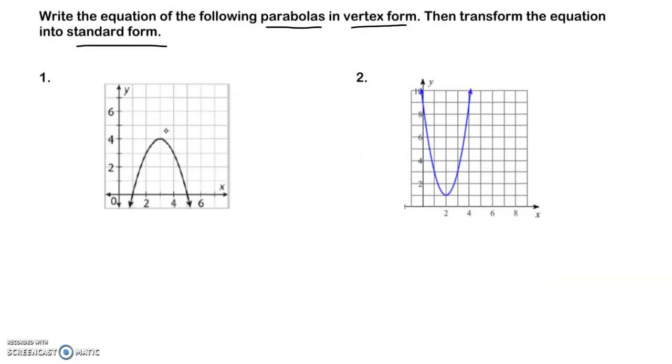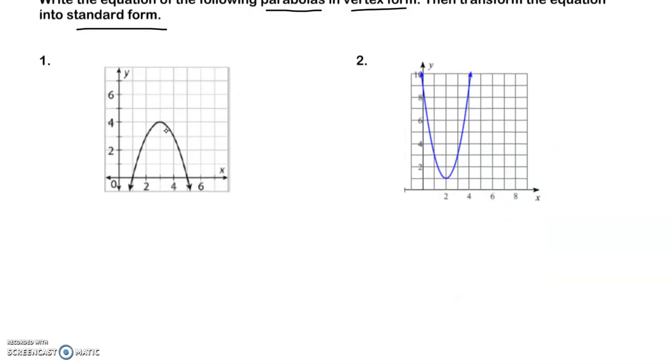So we're going to do vertex form. When I do vertex form, the first thing I do is look for the vertex, and in this case, my vertex is 3 and 4. Then I'm going to look to see what my slope is, and I went down 1, so a equals 1. But I also know it's a negative 1 because I'm going downward, so it's going to be negative 1.